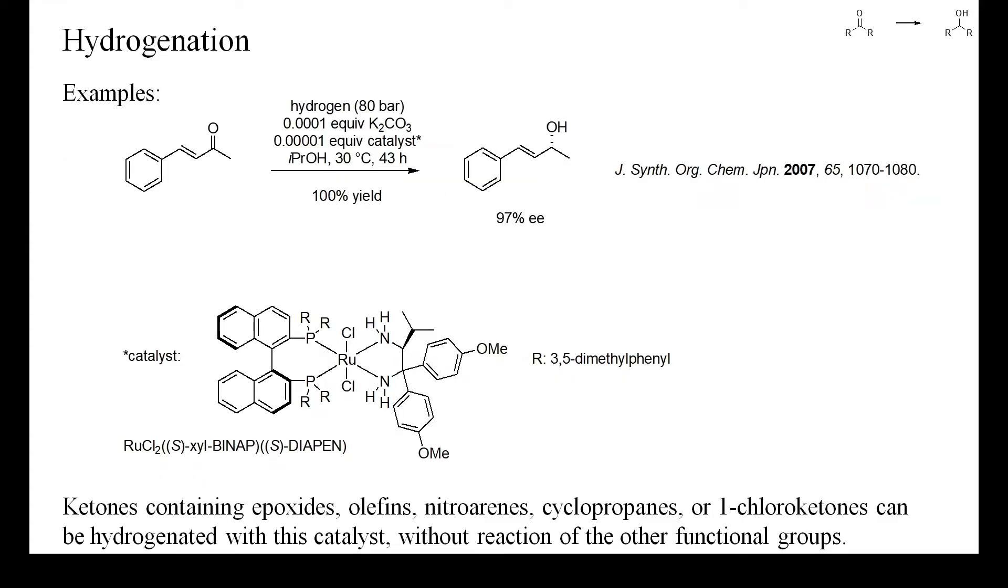This is a typical example of an enantioselective ketone hydrogenation with a ruthenium-based catalyst. With an incredibly small amount of catalyst, a very high enantioselectivity was attained, without any hydrogenation of the olefin or CO-bond hydrogenolysis. Because of the low catalyst loading, however, a complete conversion of the starting material took 43 hours.